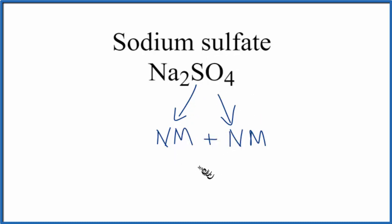When we have non-metals bonded together, that is a covalent bond, sometimes called a molecular bond. So with the sulfate ion, those are covalent bonds between the sulfur and the oxygen.